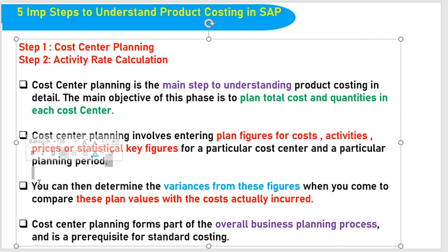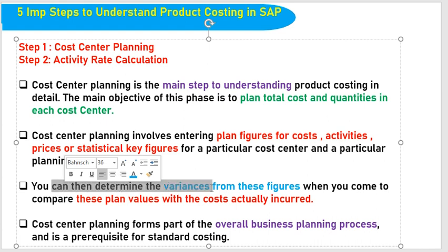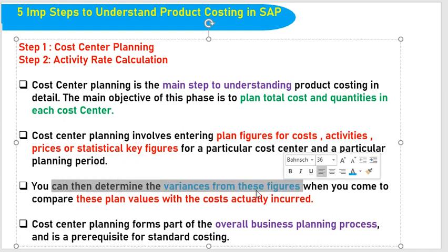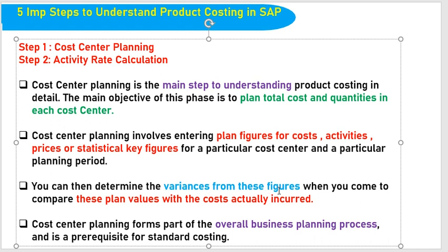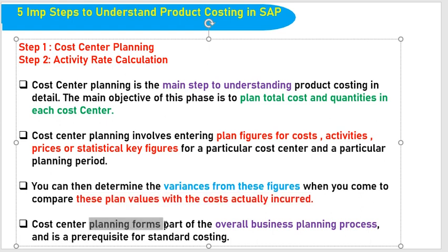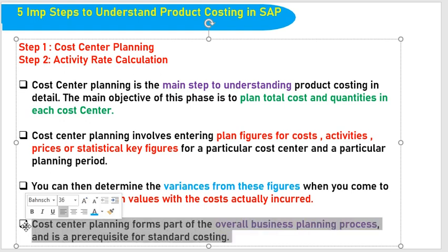We plan period-wise for particular cost centers. Based on cost elements, you can determine the variance from these figures — variance is actual cost minus planned cost. You can determine the variance when you compare the planned values with the cost actually incurred. Cost center planning forms part of the overall business planning process, and it is a prerequisite for standard costing.